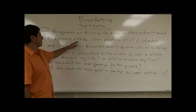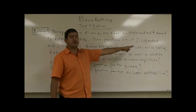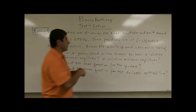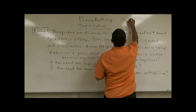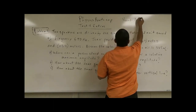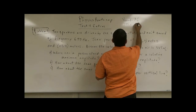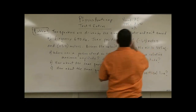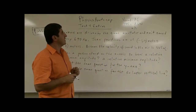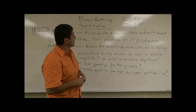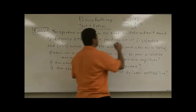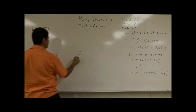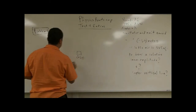The frequency is 690 Hz, which happens to be double the velocity of sound in air, 345 m/s. Using v = λf, we get 345 = λ × 690, so the wavelength is 345 divided by 690, which equals 0.5 meters.